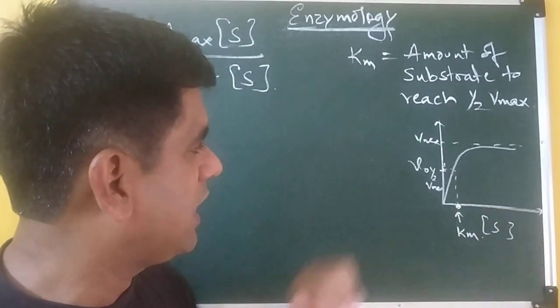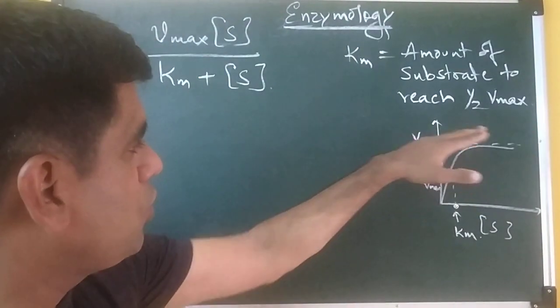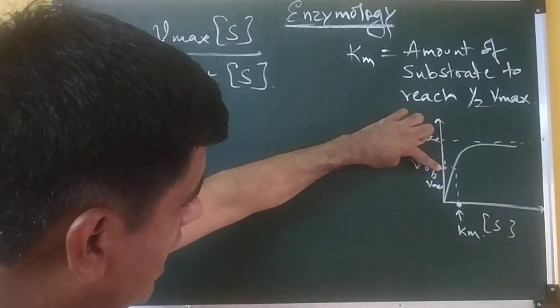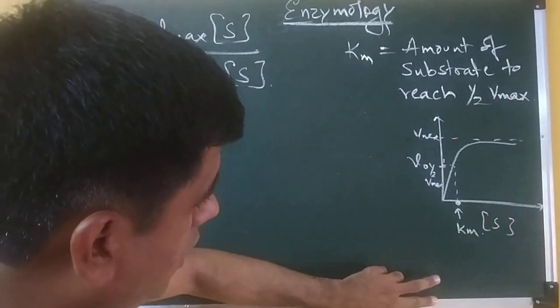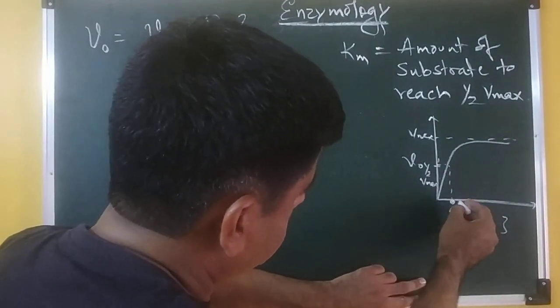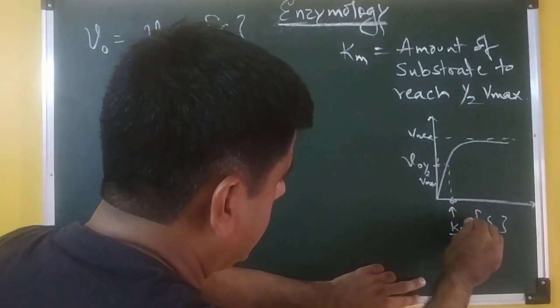we know that you have a regular rectangular hyperbola and there you have the value of Vmax. If you take half the value of Vmax, extrapolate it and take it to the x-axis where S is plotted, the value which you get here, that corresponding value of substrate is what is called as your Km.